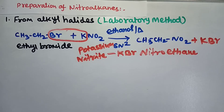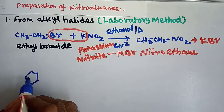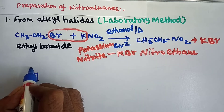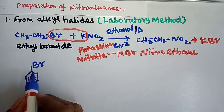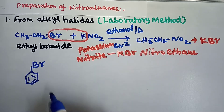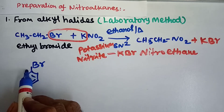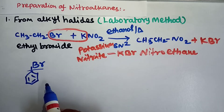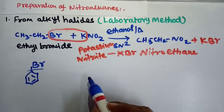But this method is not suitable for preparing nitrobenzene. Because the bromine is attached directly to the benzene ring in halobenzene or bromobenzene, and the carbon-bromine bond in that case is very strong. The breaking of this bond is very difficult.